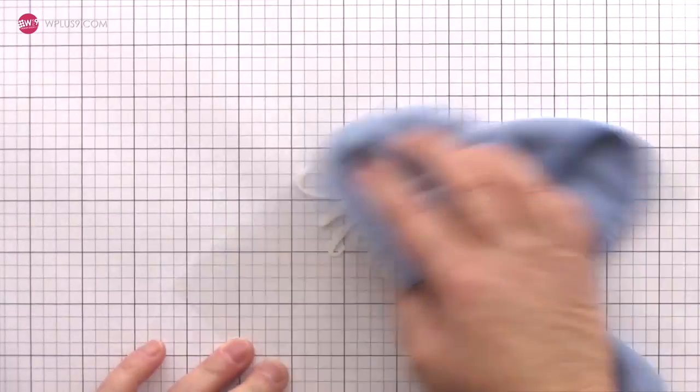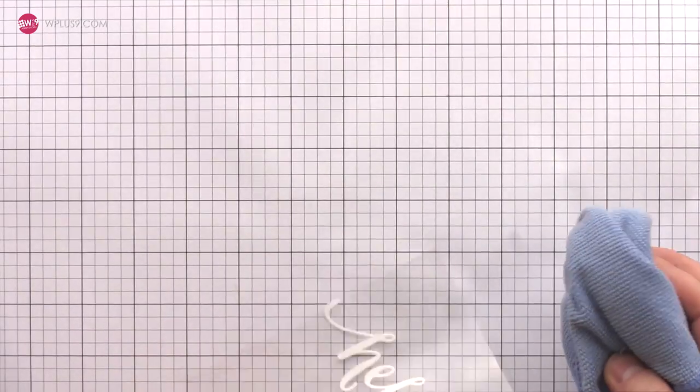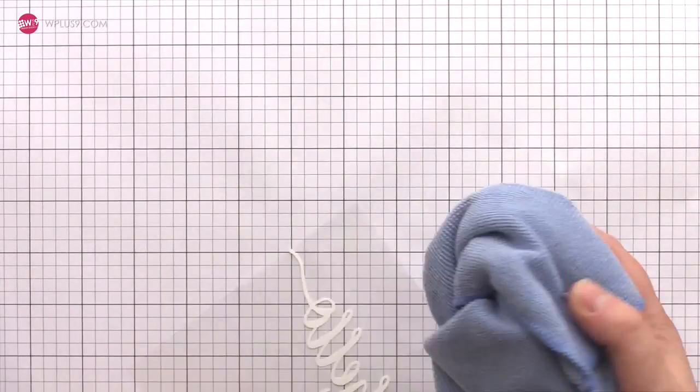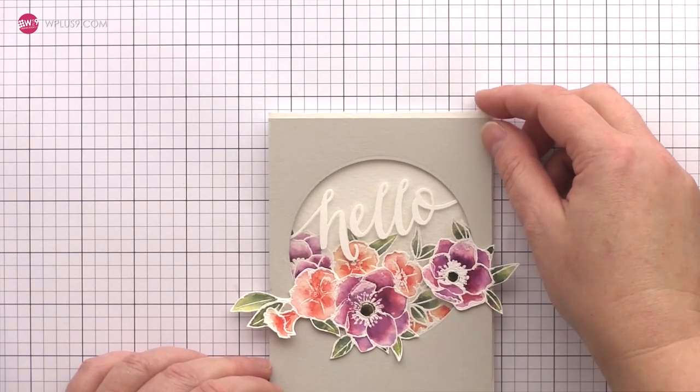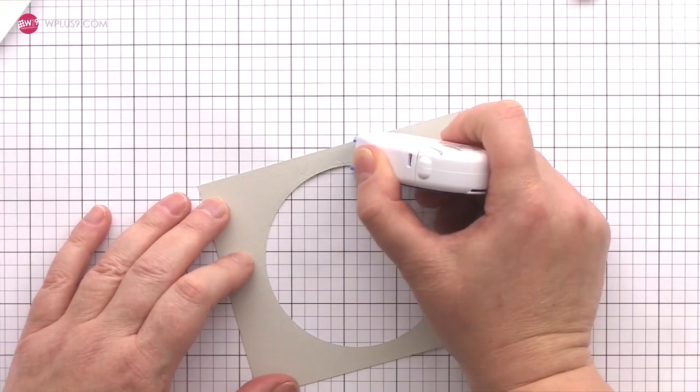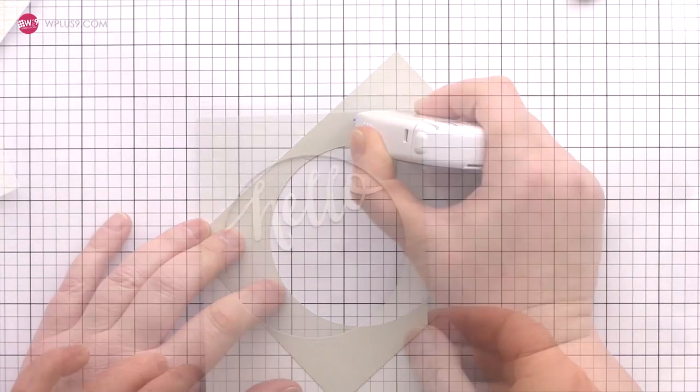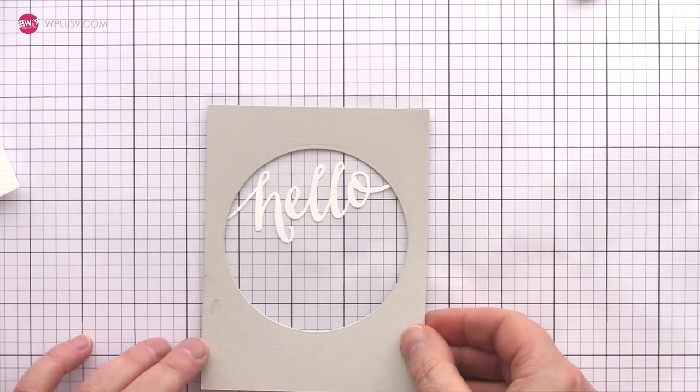To clean up the acetate of any spare EK Success Powder Tool I give it a good rub over with a microfiber cloth. Now the shaker card is starting to take shape and it's time to construct the shaker element. I'm using a glue roller to add adhesive to the back of the grey panel and then lining up and adhering the piece over the acetate.